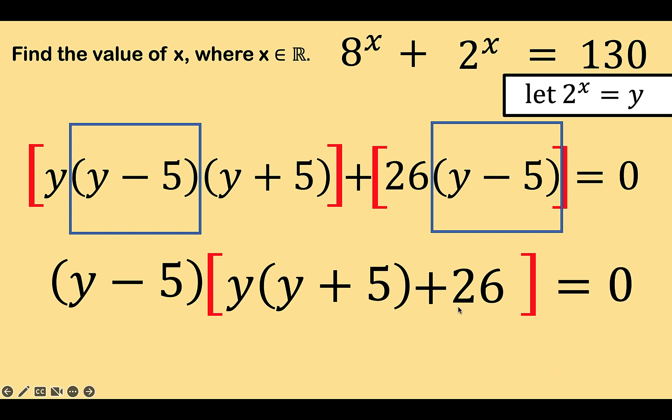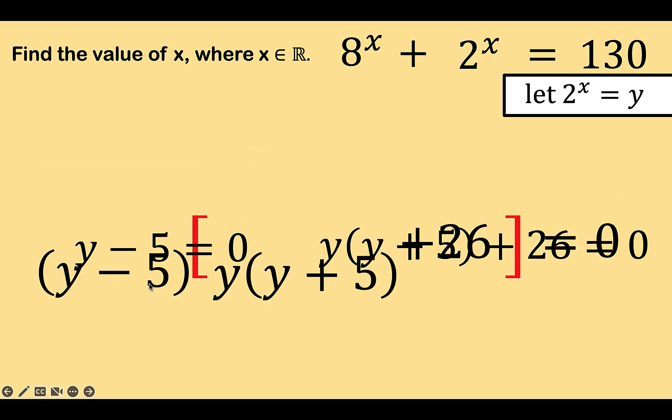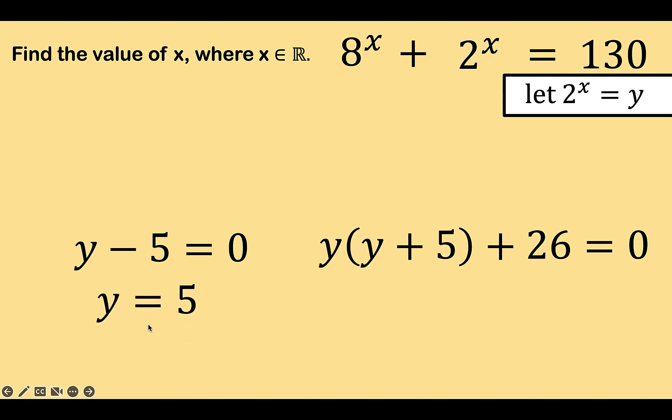Notice now that we have here two factors and the product is equal to 0. So, that means we can now equate the first factor y minus 5 to 0 and equate the second factor y times the quantity y plus 5 plus 26 taken as one group equals 0. So, for this equation at the left side, we know that y is equal to 5. And let's remember this value because we are going to substitute that in our previous substitution.